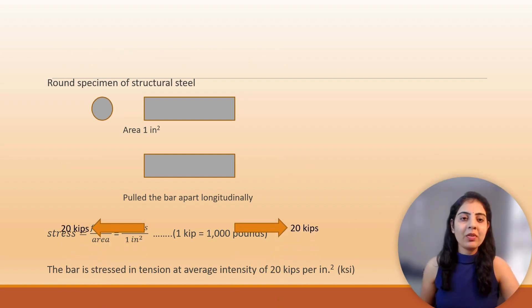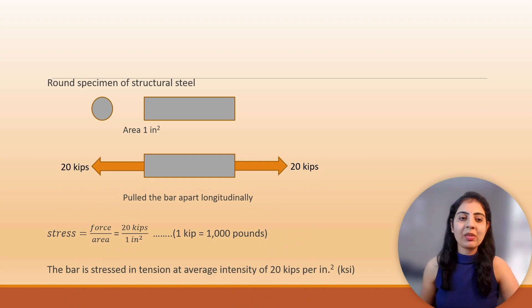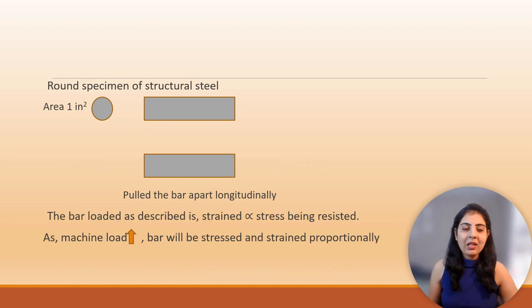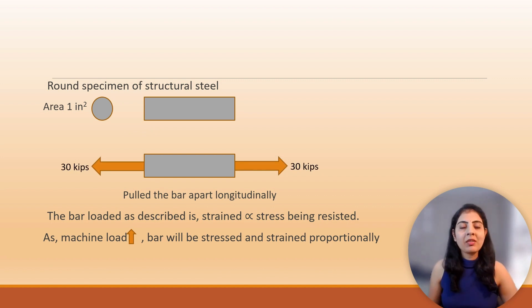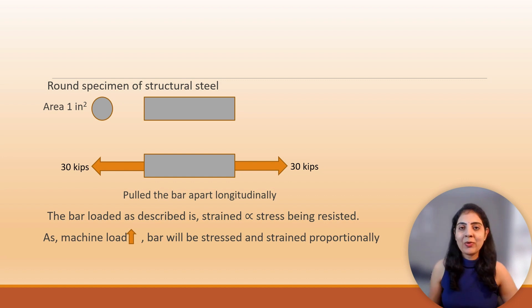If the force is increased to 20 kips, then the bar is stressed in tension at an average intensity of 20 kips per inch square. The bar loaded as described is strained in direct proportion to the stress being resisted. As machine load increases, the bar will be stressed and strained proportionally.